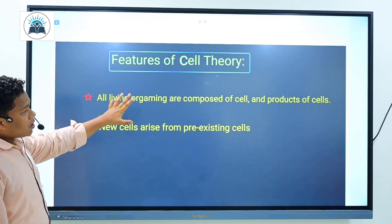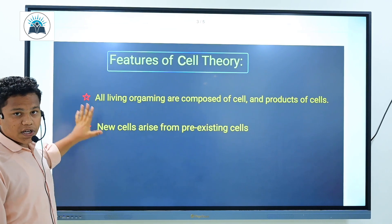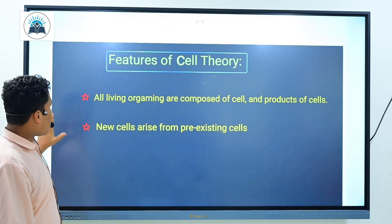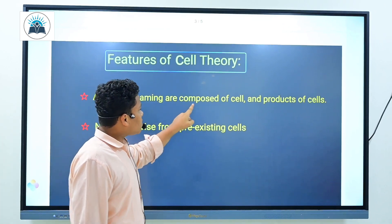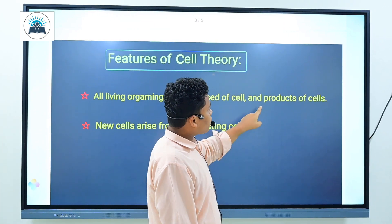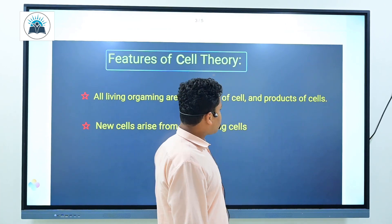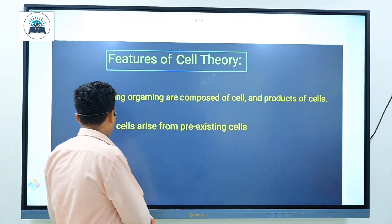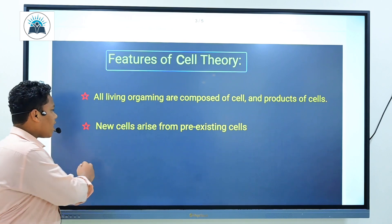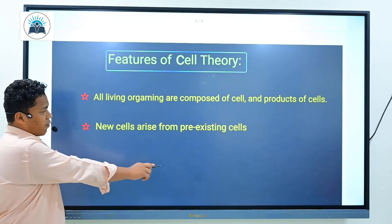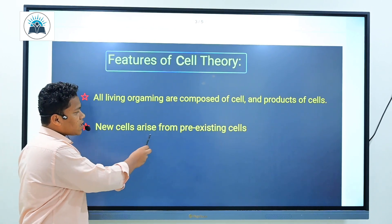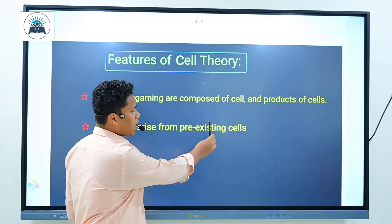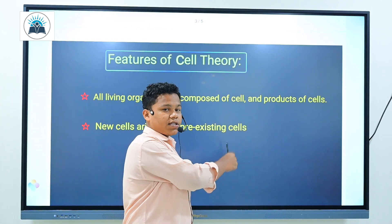The features of Cell Theory which are known today are: all living organisms are composed of cells and products of cells, and the second one, given by Rudolf Virchow, is new cells arise from pre-existing cells.